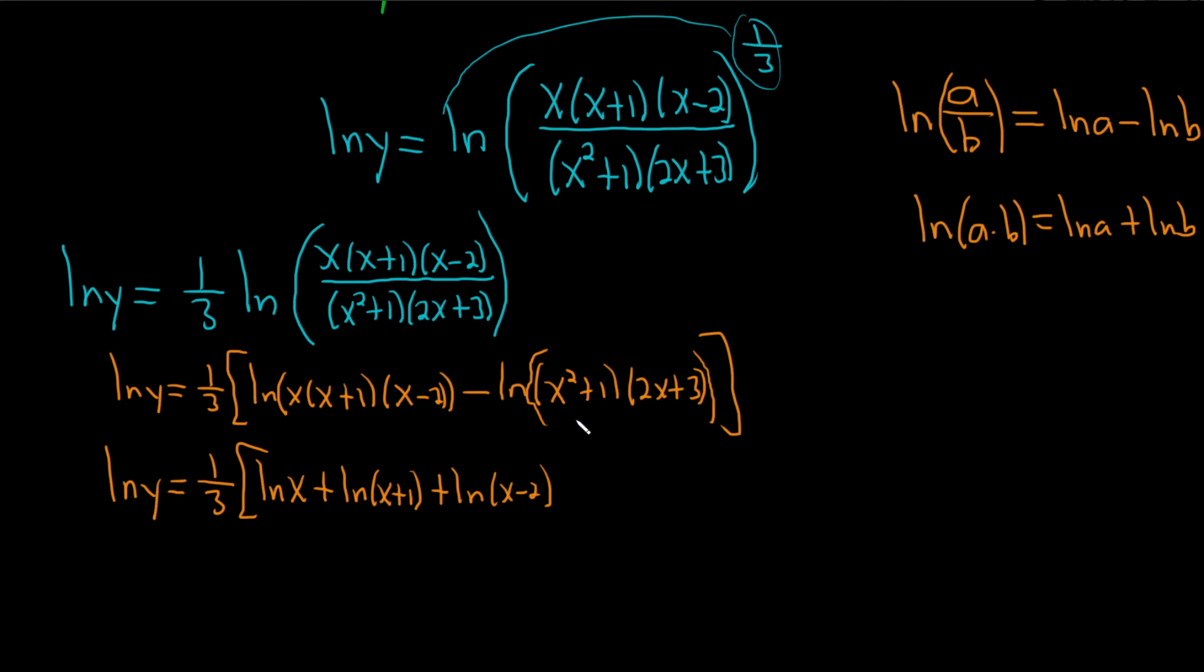Here we have to be careful because this is going to turn into 2 log. So minus parentheses, natural log of the first one. So it'll be ln of x squared plus 1 plus ln of 2x plus 3. Really nice. Parentheses, bracket.